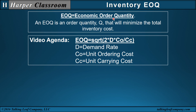EOQ stands for economic order quantity, and an EOQ is an order quantity Q that will minimize the total inventory cost. The EOQ equation is the square root of 2 times D — the constant demand rate — times C sub O divided by C sub C, where C sub O is the unit ordering cost: the cost for each order placed in the purchasing department, divided by C sub C, the unit carrying cost: the cost to carry each item in your warehouse over a period of time.